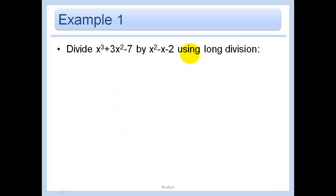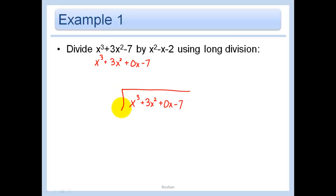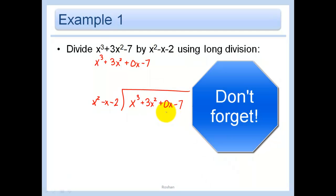Now we'll use that same principle to divide two polynomials. When writing these out, make sure all places are accounted for. In this example we have x cubed plus 3x squared — write plus 0x as your placeholder — because you need the cube, the squared, the x, and the constant terms. So we have x cubed plus 3x squared plus 0x minus 7, divided by x squared minus x minus 2. Do not forget the placeholder.